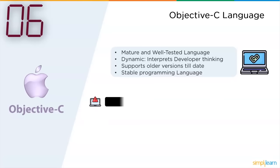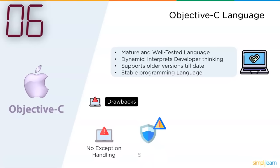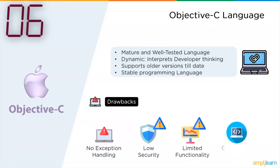The drawbacks Objective-C had: no exception handling, it was low on security, it had limited functionality and a complicated syntax. Despite these drawbacks, this programming language still has a little demand in the current IT industry.